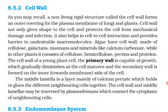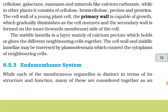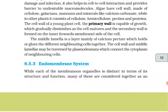The cell wall of a young plant cell, the primary wall, is capable of growth, which gradually diminishes as the cell matures and the secondary wall is formed on the inner side towards the membrane. The middle lamella is a layer mainly of calcium pectate which holds or glues neighboring cells together. The cell wall and middle lamella may be traversed by plasmodesmata, which connect the cytoplasm of neighboring cells.